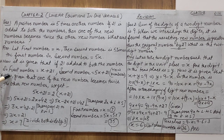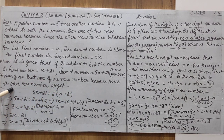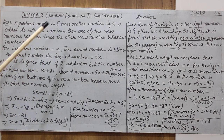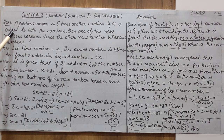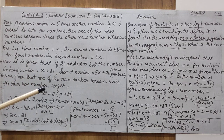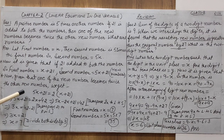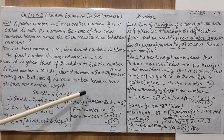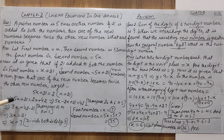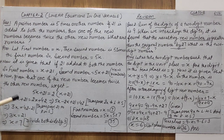Because the condition is that one of the new numbers becomes twice the other new number, you must understand the meanings: '5 times' means multiply by 5, 'added' means plus, and 'twice' means double, that is, multiply by 2. Only then can you correctly frame the equation.